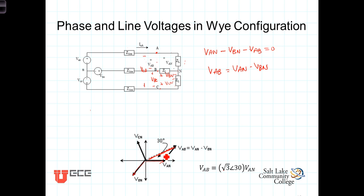And the angle of VAB, that angle right there, is 30 degrees greater than the angle VAN. So, we write that this way,